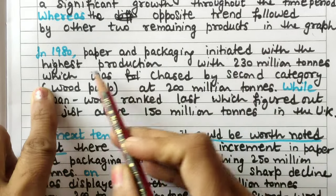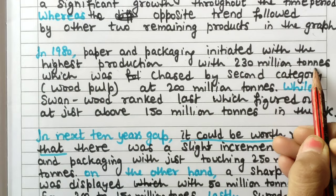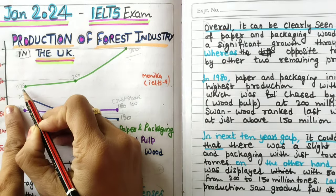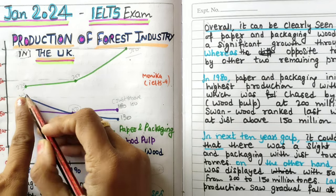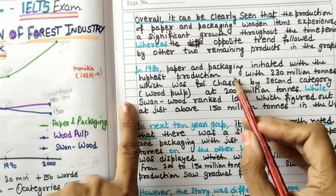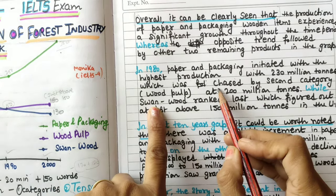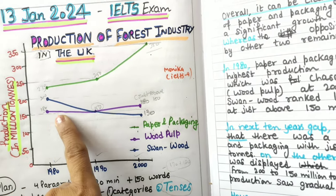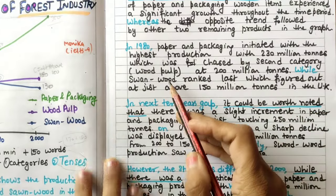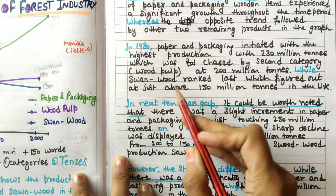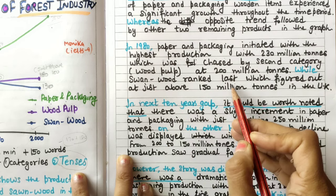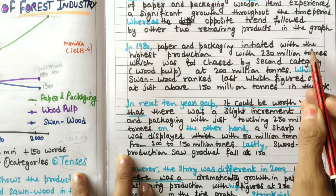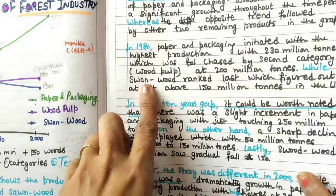Starting with 1980: 'Paper and packaging initiated with the highest production at 230 million tons, which was chased by the second category, wood pulp, at 200 million tons, while sawn wood ranked last, figured at just above 150 million tons in the UK.' I've compared all three categories within the same year — a simple comparative approach.